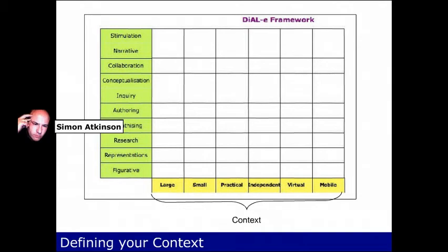The first requirement is to establish very clearly what the context of this particular learning activity is. Is one designing an activity that uses an artifact for an online context? Is it to stimulate debate in a seminar? Is it a large lecture theatre context? To have some serious thought about the nature of the physical space and the nature of the learner's context is an important part of that process, and will indeed influence what does and doesn't work when one actually comes to defining the nature of the activity.